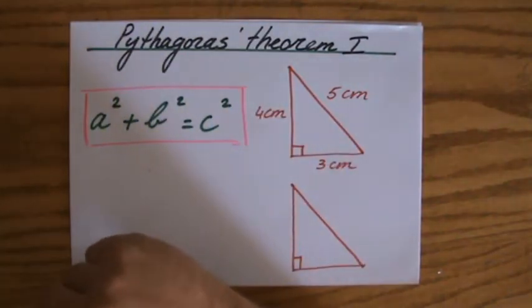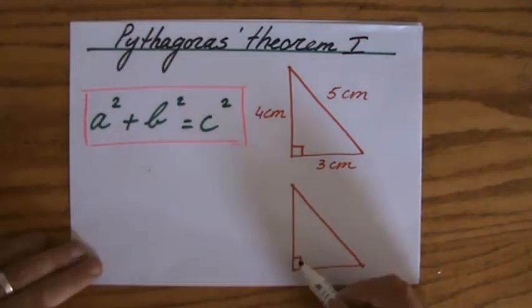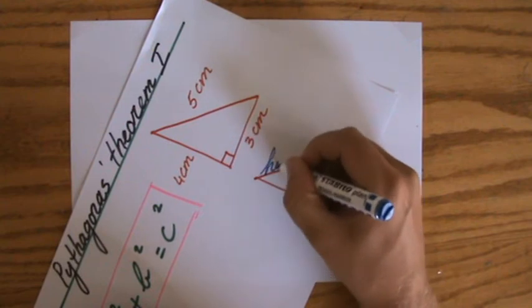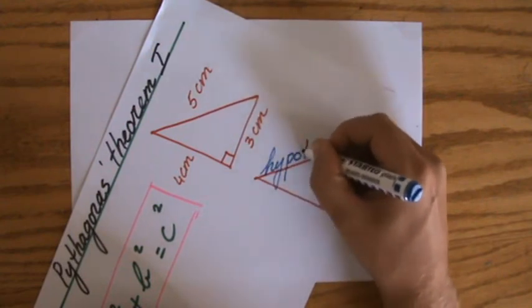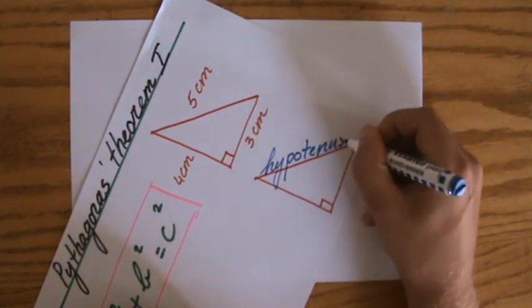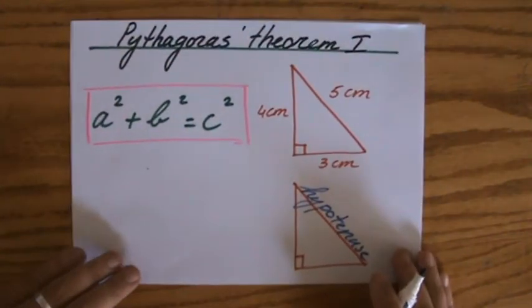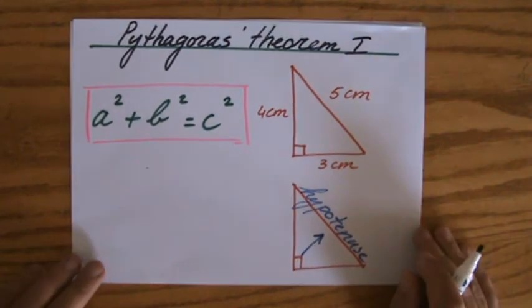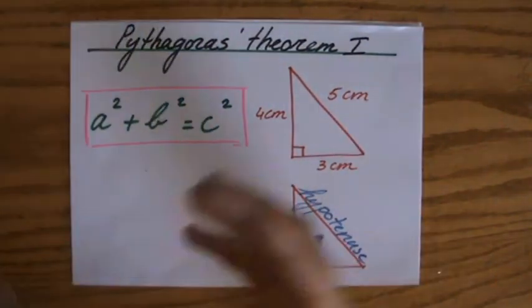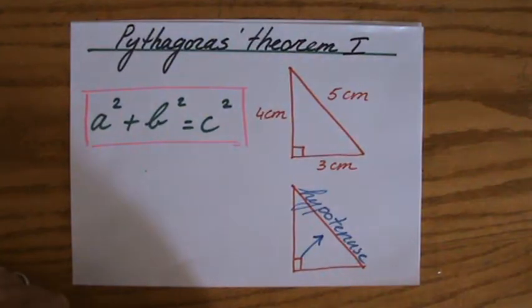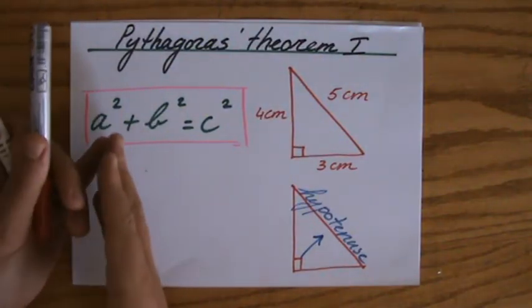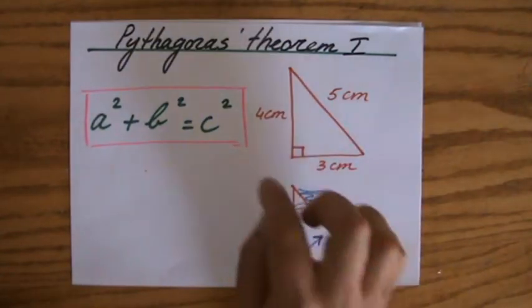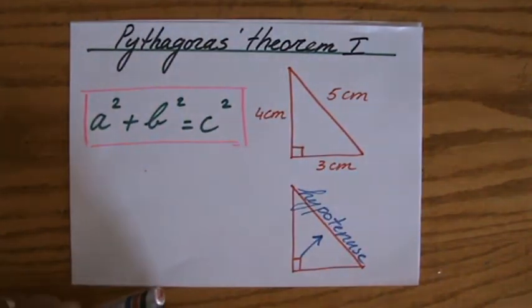Now, what is a hypotenuse? That is the side across the 90-degree angle. We call that the hypotenuse. That is the side of a right-angled triangle across the 90-degree angle. It's always the longer side of the triangle as well. And if you are looking at the Theorem of Pythagoras, the hypotenuse always stands for C.